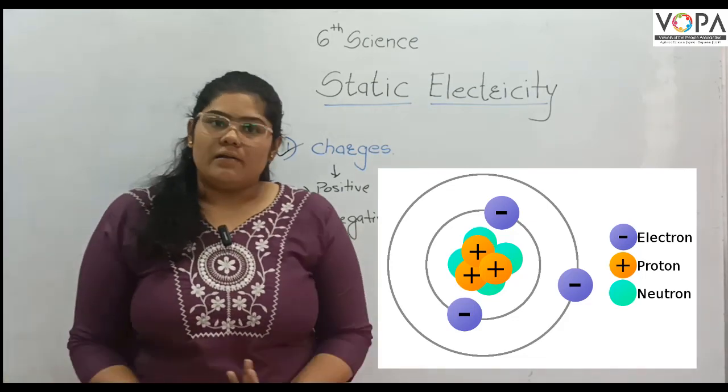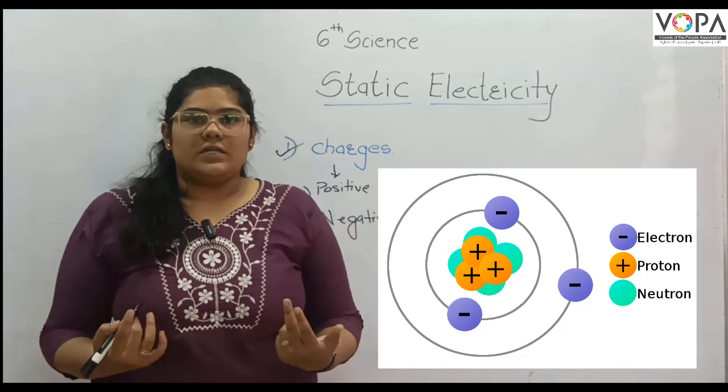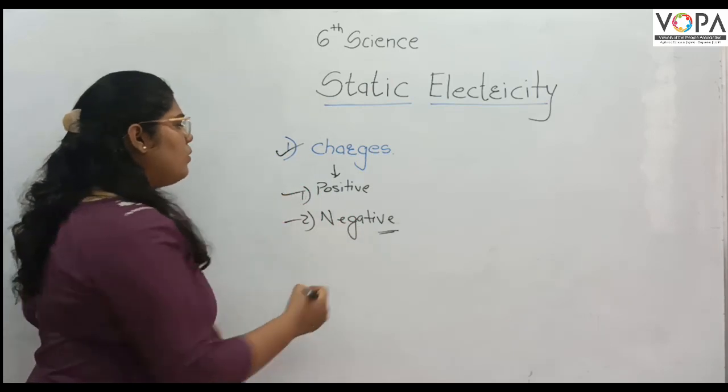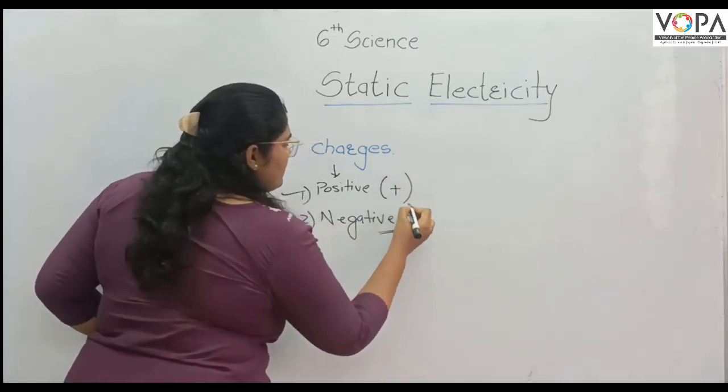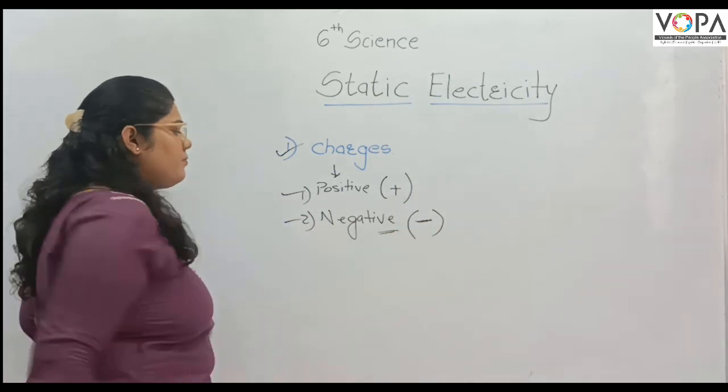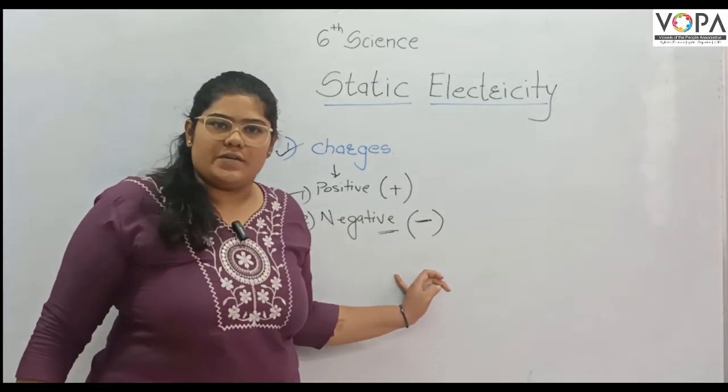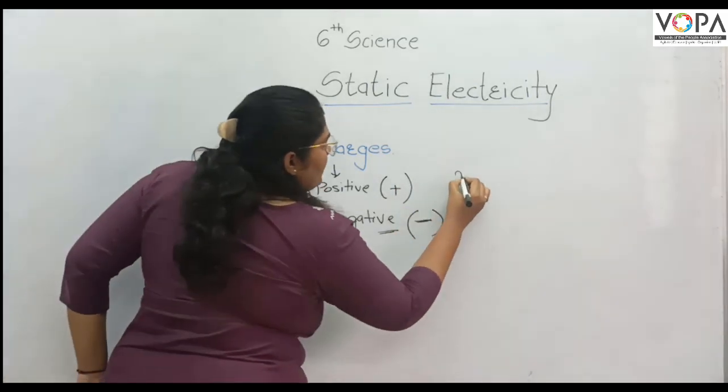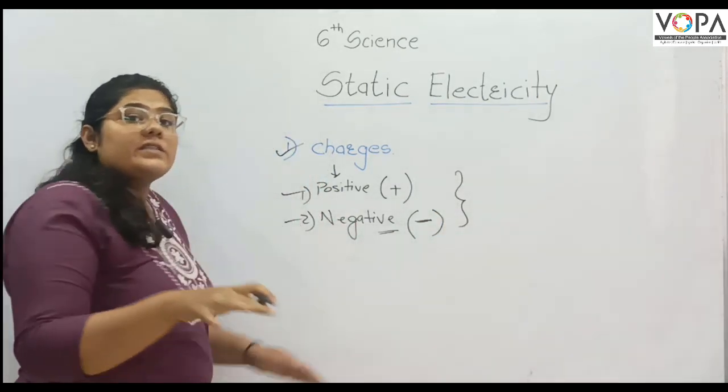Every particle is made with two categories of charges. One is positive, which means plus sign. Negative means negative sign. These two categories of charges are equal.